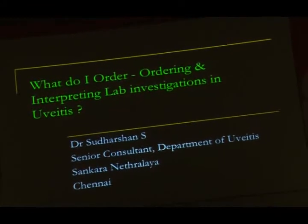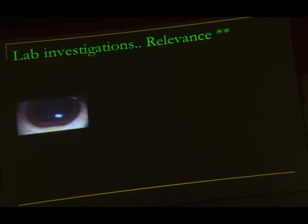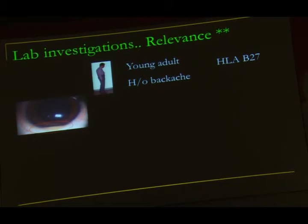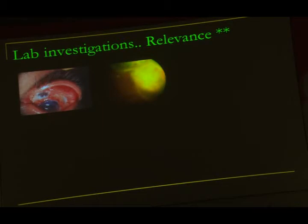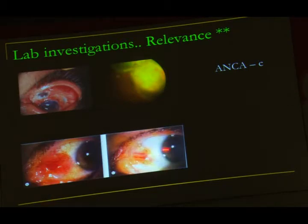For a hypopyon in a young adult with backache, order HLA-B27. With a similar hypopyon combined with aphthous ulcers and retinal vasculitis, order HLA-B51. With necrotizing scleritis and posterior segment manifestations, order ANCA. If the presentation responds to topical steroids alone and is not recurrent, no investigation may initially be needed.